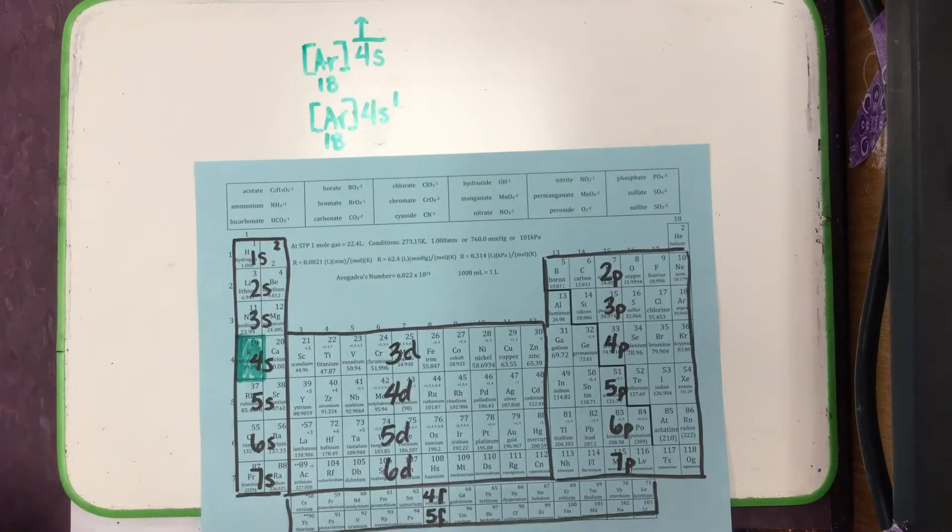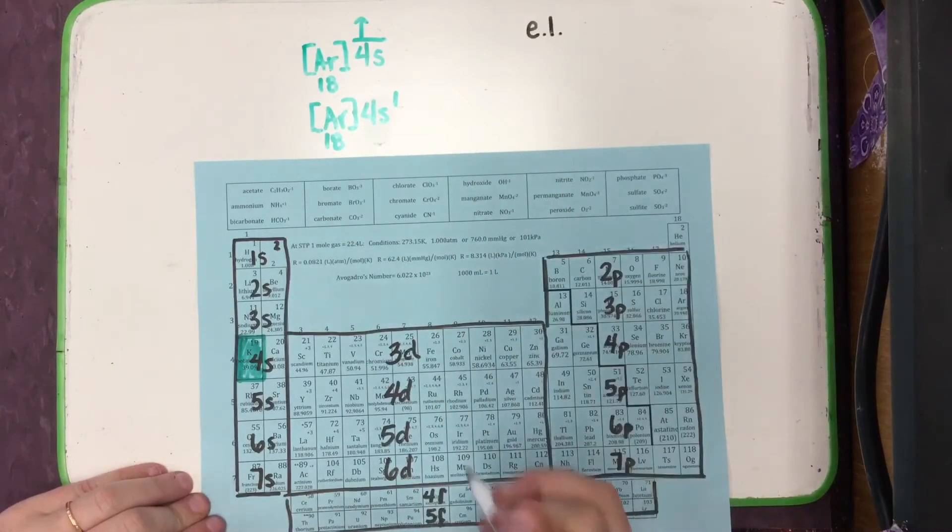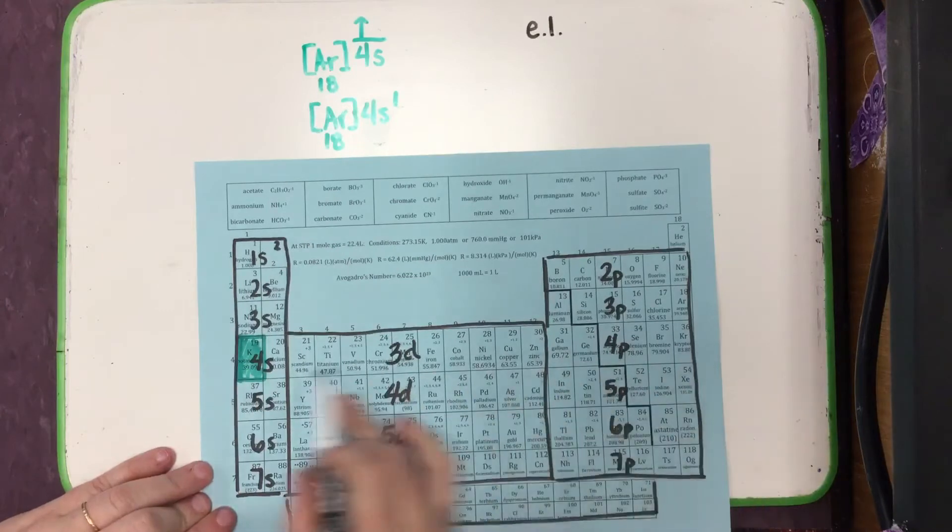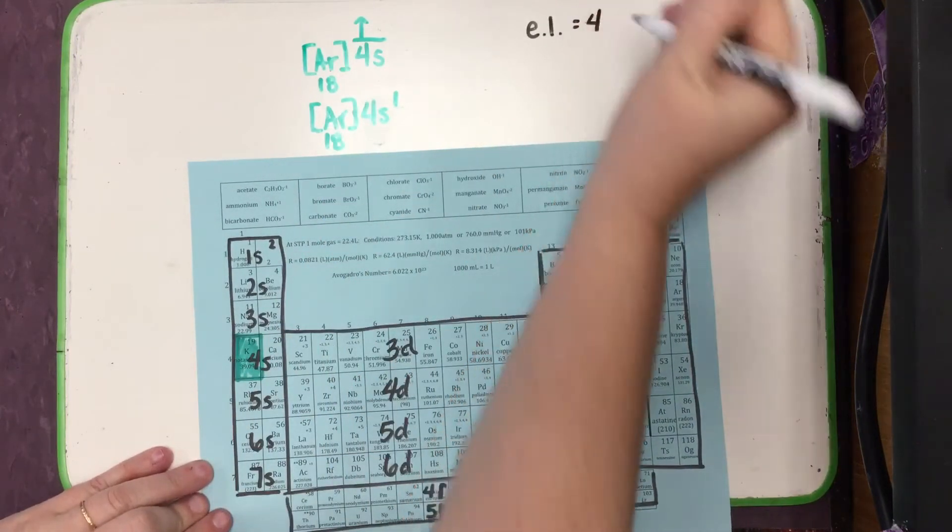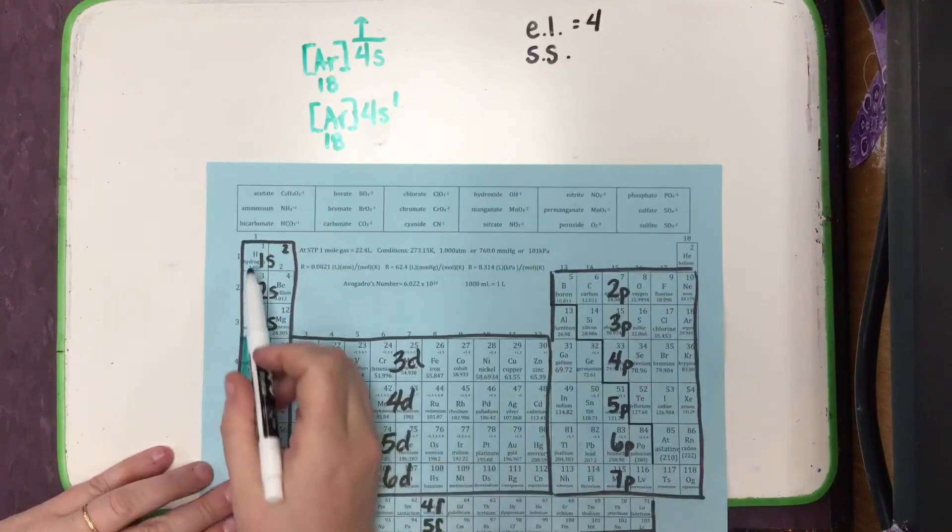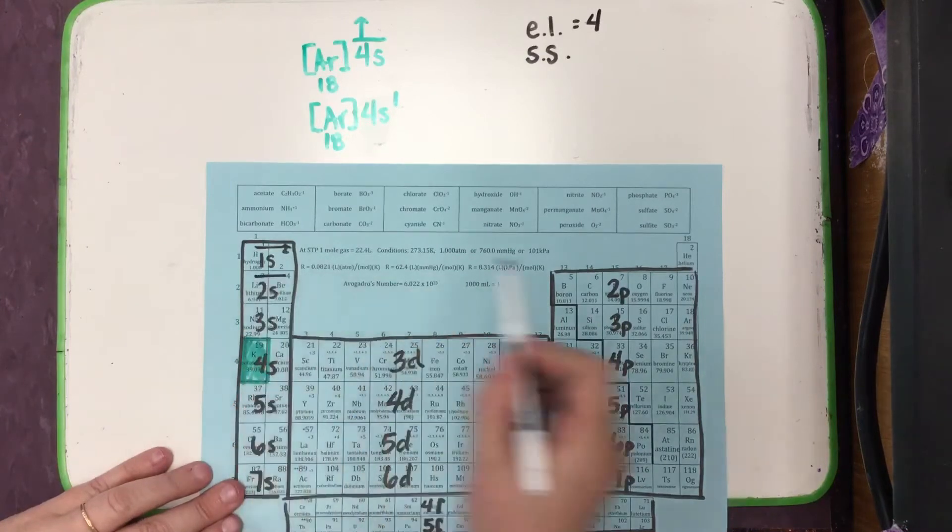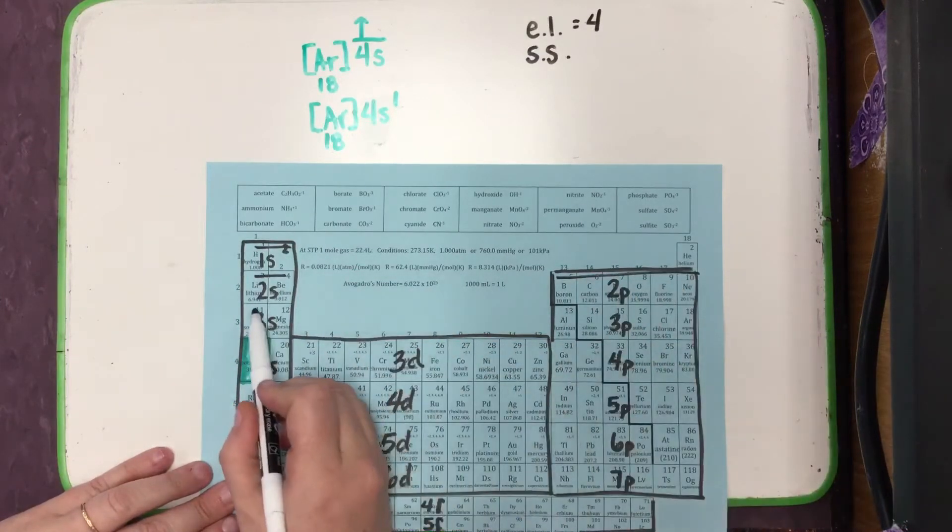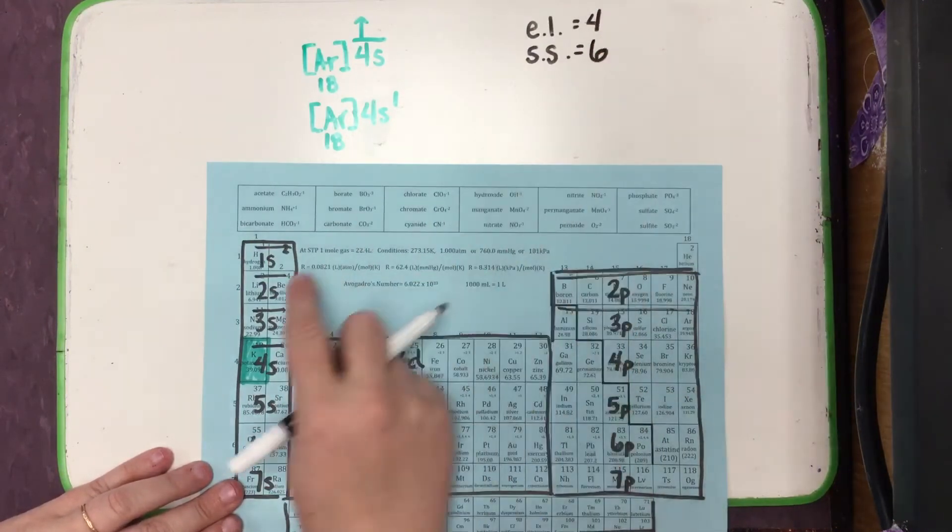We can, of course, determine energy levels, which we would do just looking at the row on the periodic table it's in, or the biggest number we wrote. That's 4. We can determine subshells, which would be the rooms, or these individual regions: 1, 2, 3, 4, 5, 6.